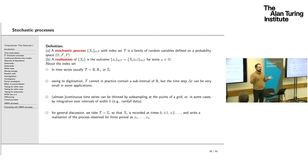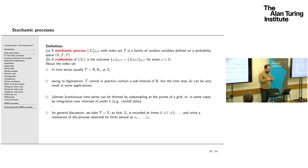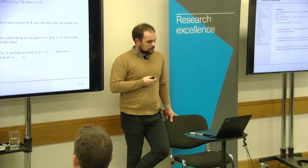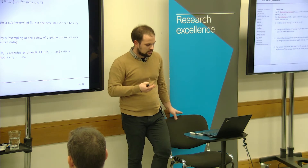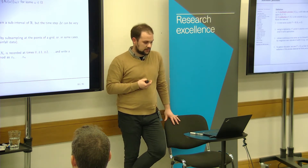The time set T can take various forms: a real line, the integers, or some subset of the real line. Because of digitization, measurements are digitized, though the time step can be very small — in some applications delta t can be subdivisions of a second. Continuous time series can be subsampled on a grid, or for continuous phenomena like rainfall, we obtain discrete series by aggregating over time intervals.